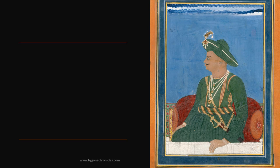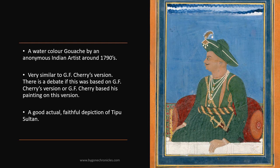Moving to a final image, a watercolour gouache by an anonymous Indian artist, rendered around the 1790s, very similar to G.F. Cherry's version. However, there is a debate if this was based on G.F. Cherry's version, or if G.F. Cherry based his painting on this version. But it is a good, actual, faithful depiction of Tipu Sultan.